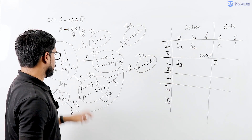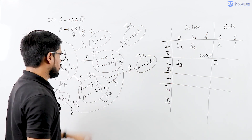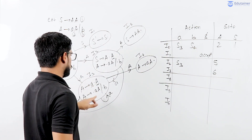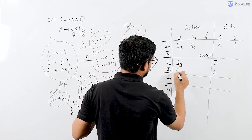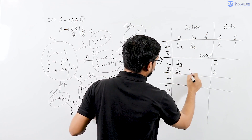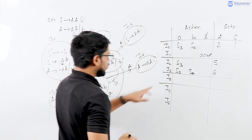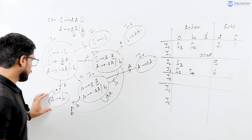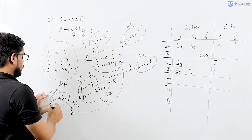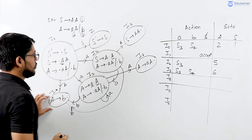Let us take I3 state. On small b it will go to I4 (shift 4). Now I4 is the final state. I have three productions — production 1, 2, 3. I4 corresponds to production number 3, meaning R3. So R3 will be placed only in the follow of the left-hand side.